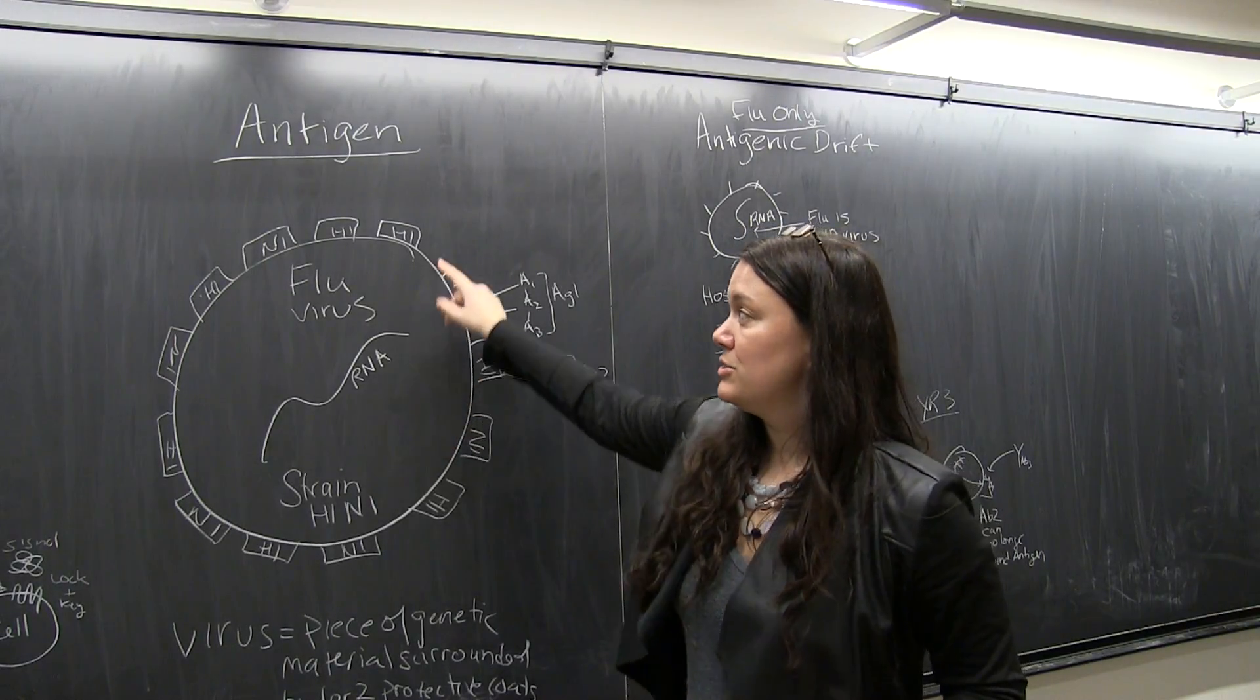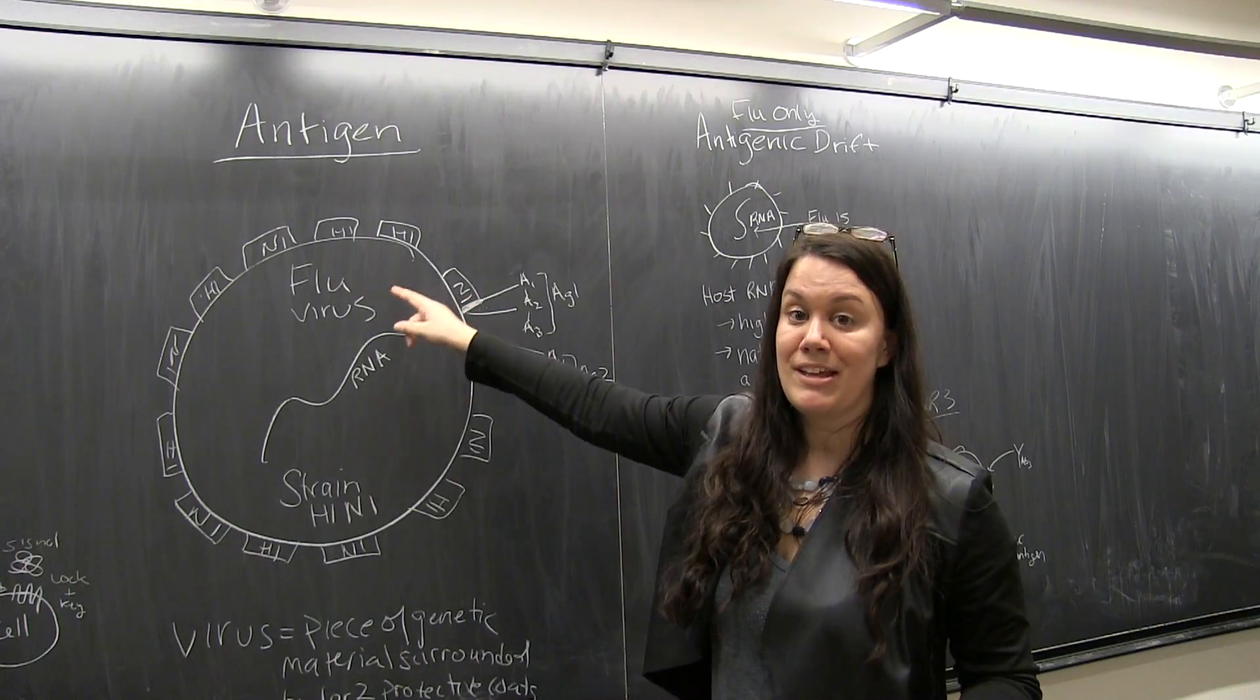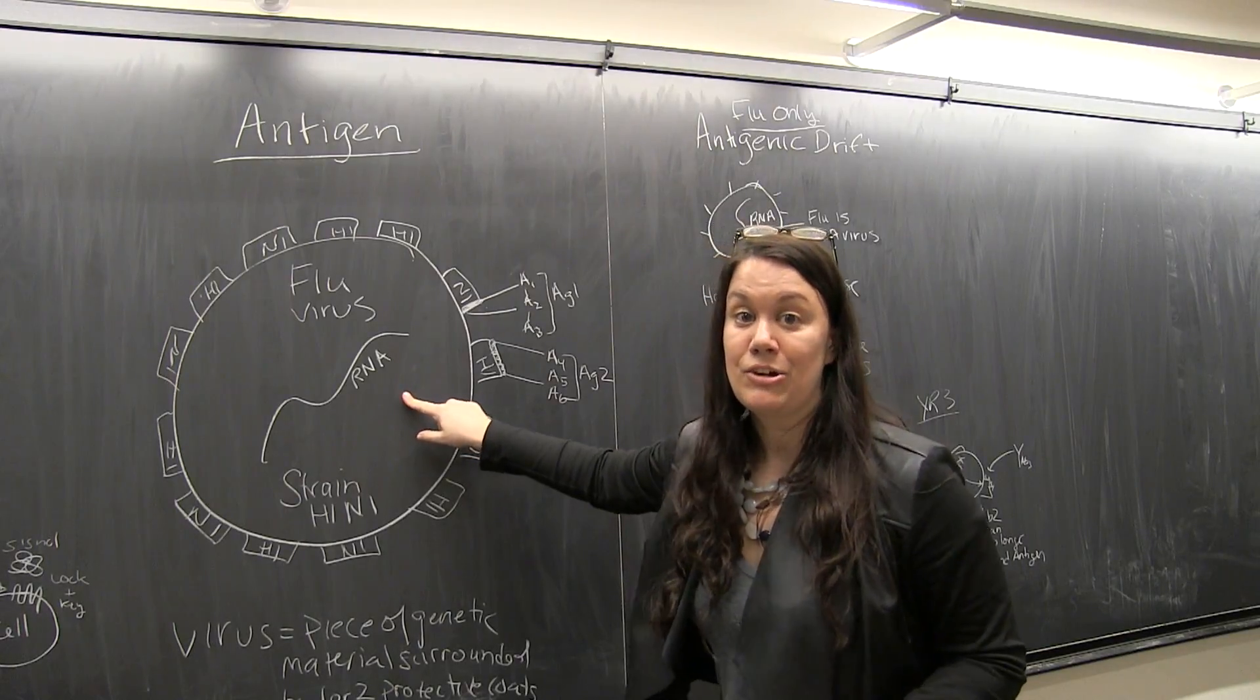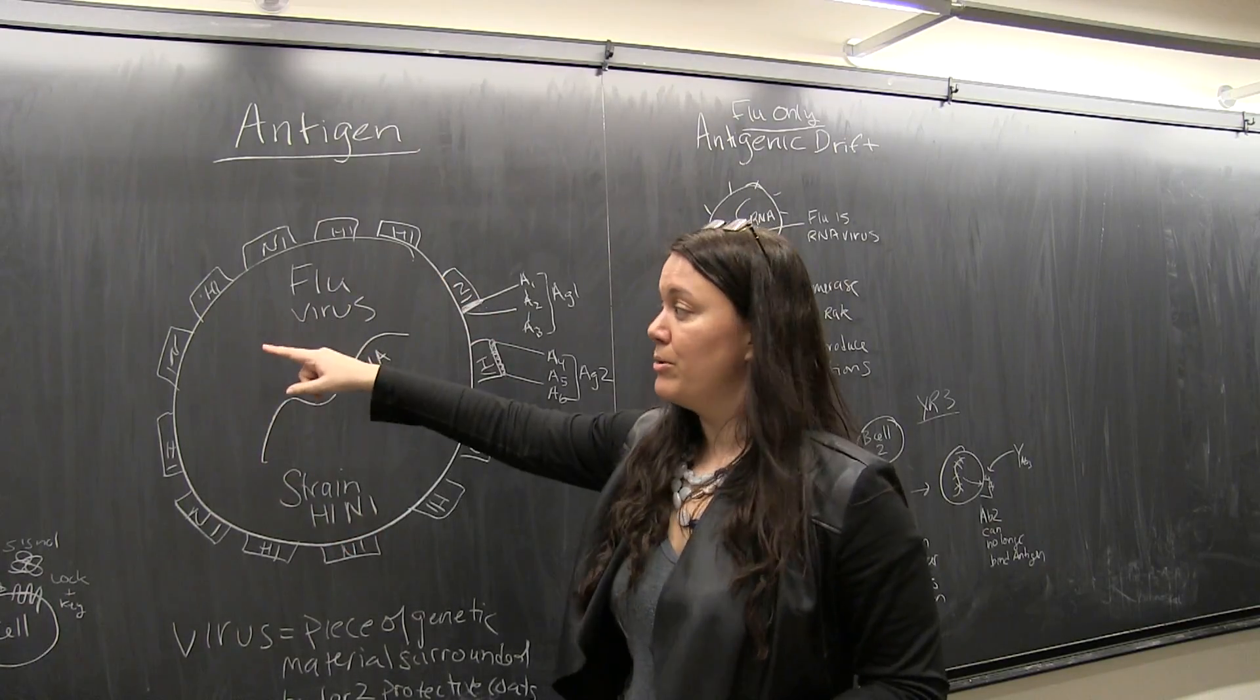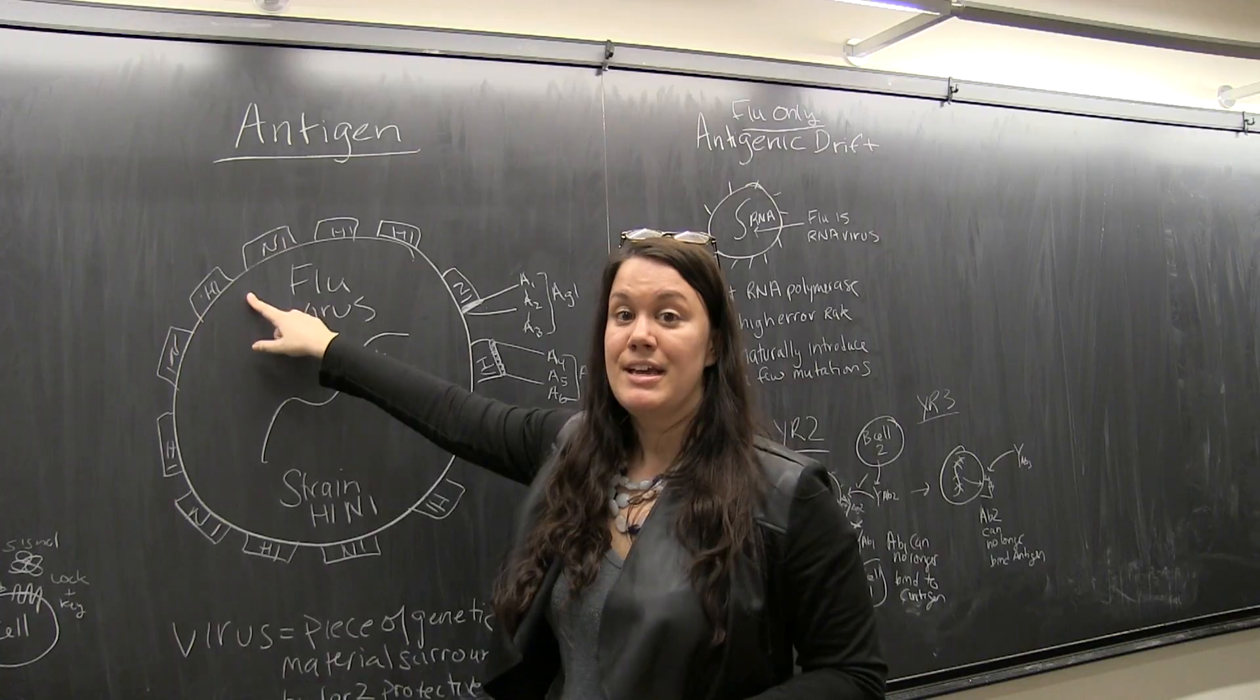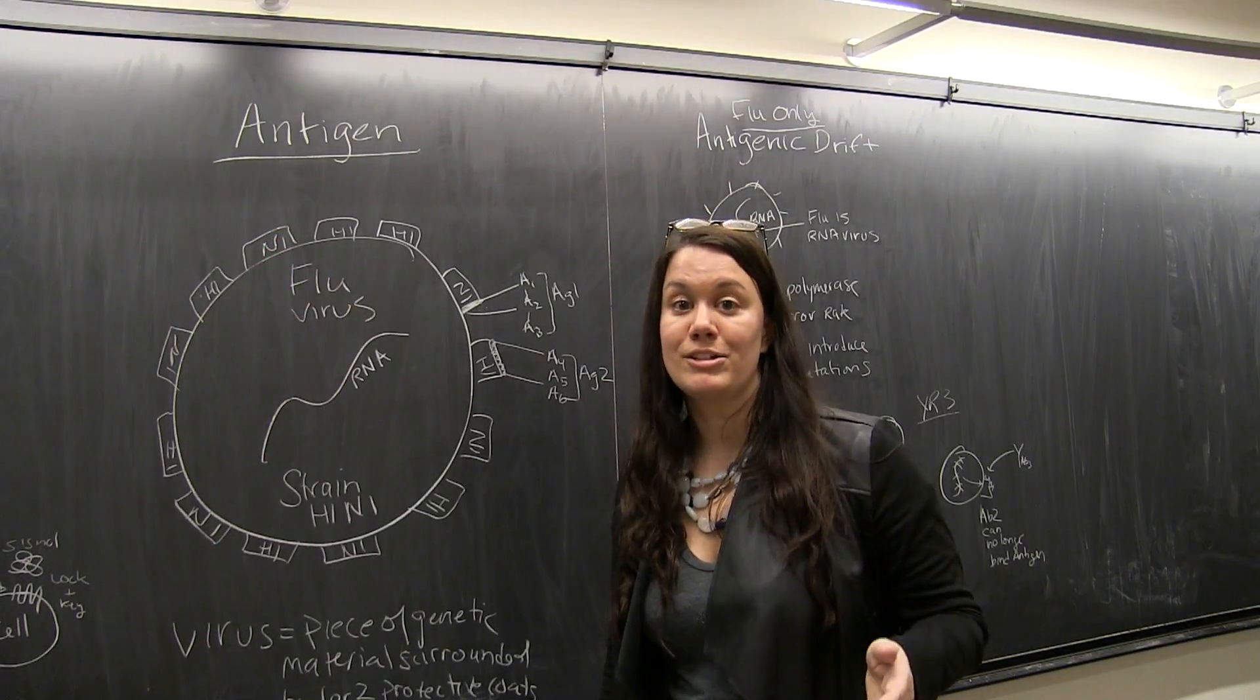And so here's the outer envelope, and if we had a real drawing there'd be a capsid in here. We have a piece of genetic material, which in flu virus is RNA, and then coating the envelope are these spike proteins. And for flu virus they're called H and N proteins, and you can watch that video.